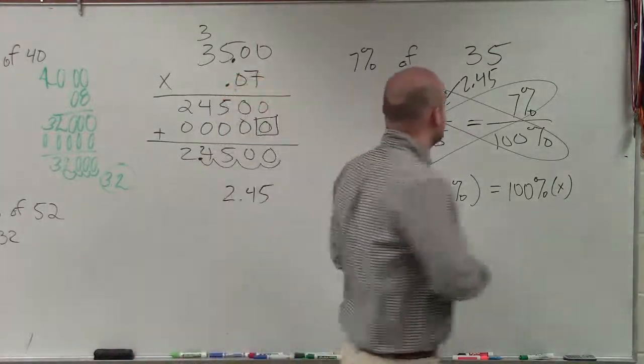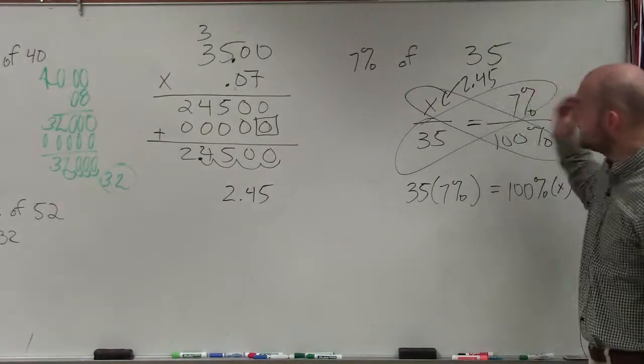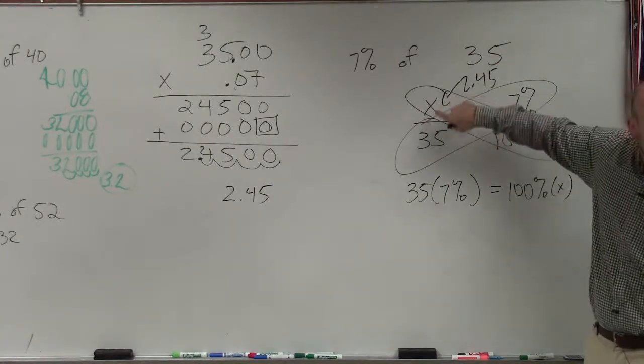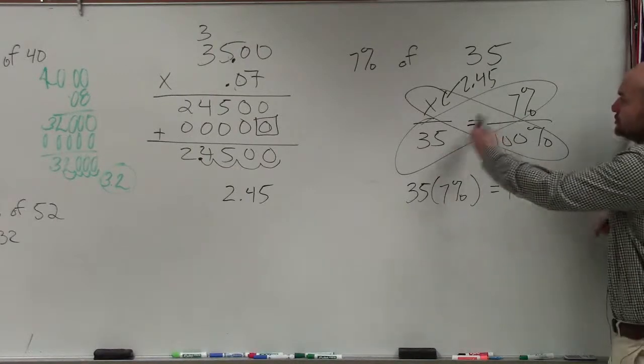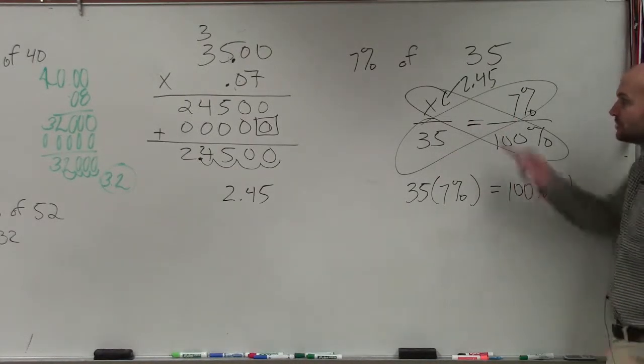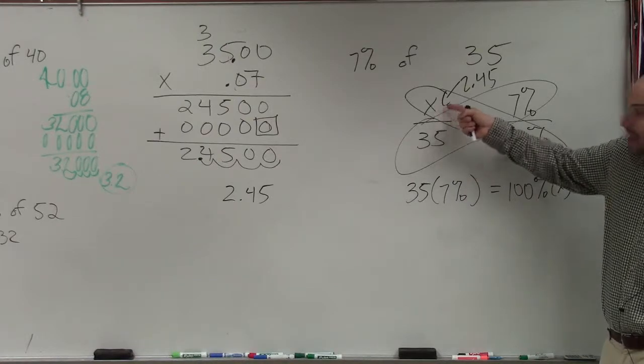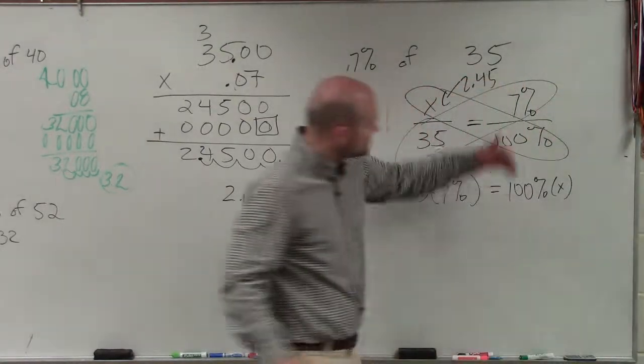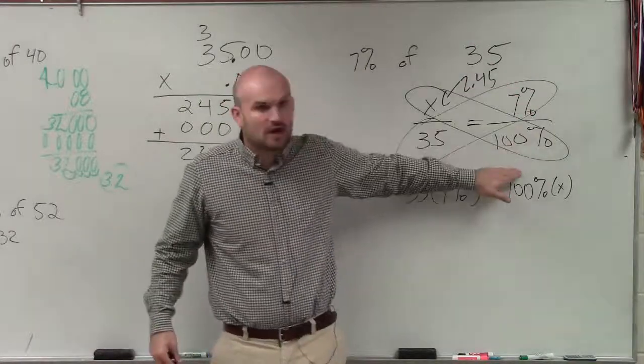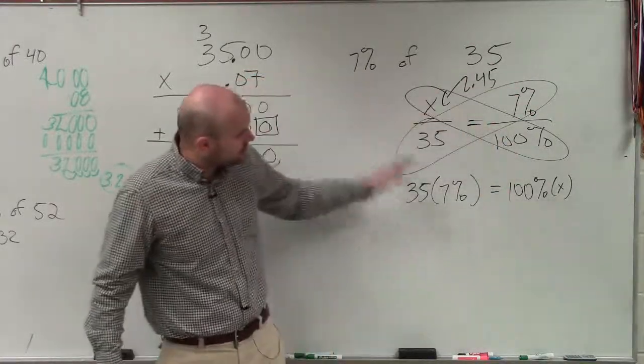What I want to do is show you when you have 7% of a number, you're looking for a number out of 35 that is equivalent to 7% out of 100%. So your x is a number. What number out of 35 is going to be equivalent to 7% out of 100%? So when you create your cross product...